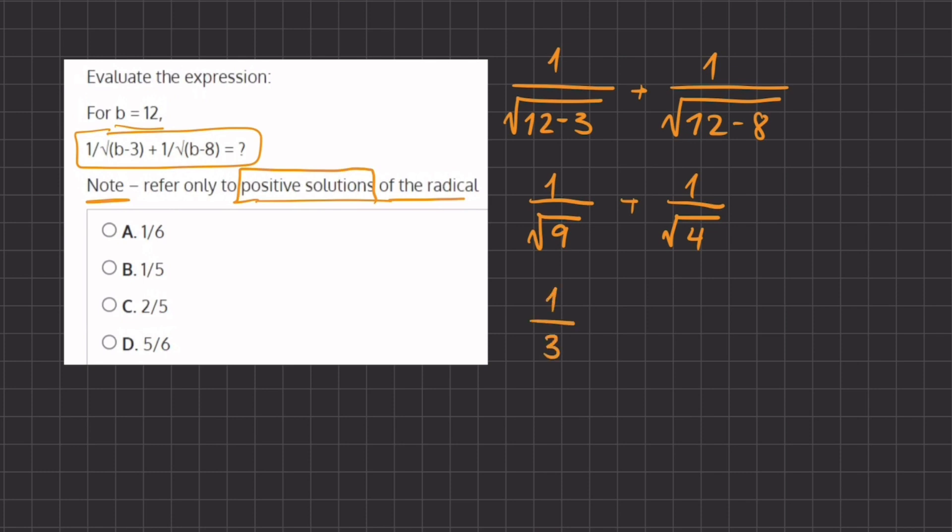We have 1 divided by 3, and 1 divided by 2. Now in order to add these two fractions together, we have to have a common denominator. And our common denominator will be 6. That means that we'll multiply this fraction by 2, and we'll multiply this fraction by 3.